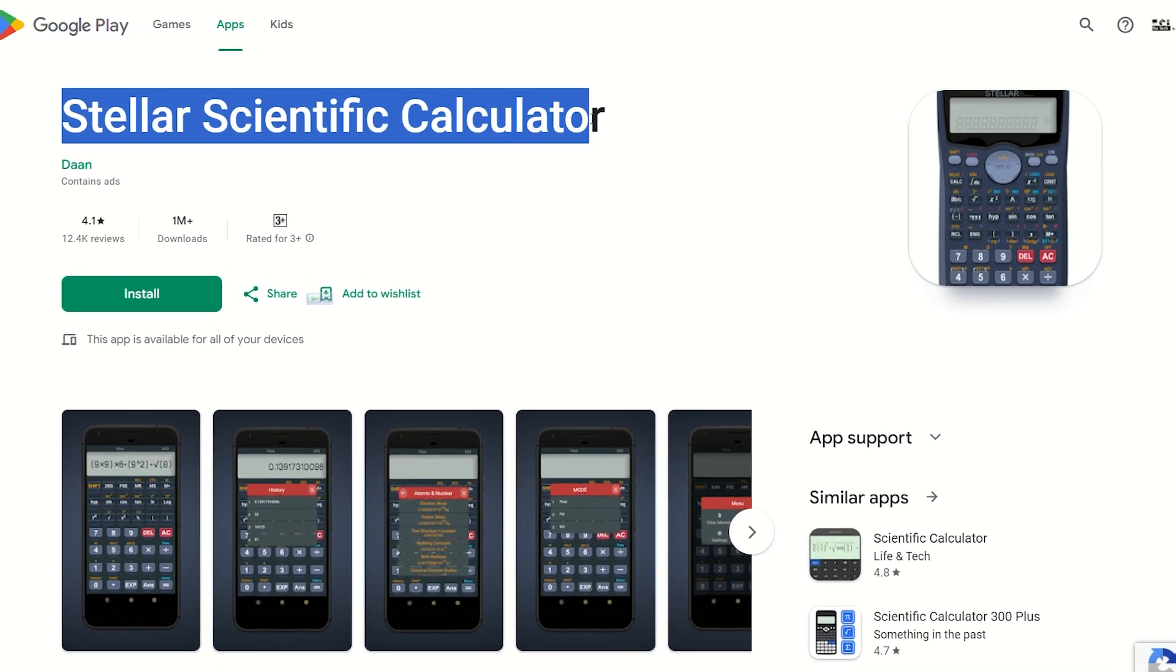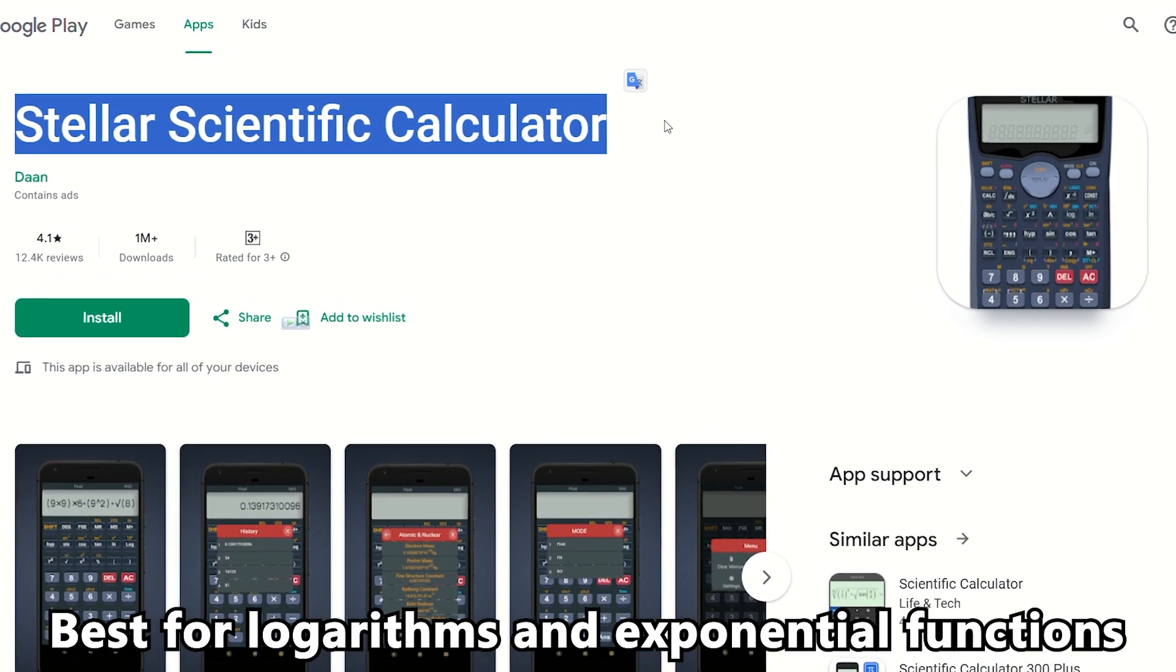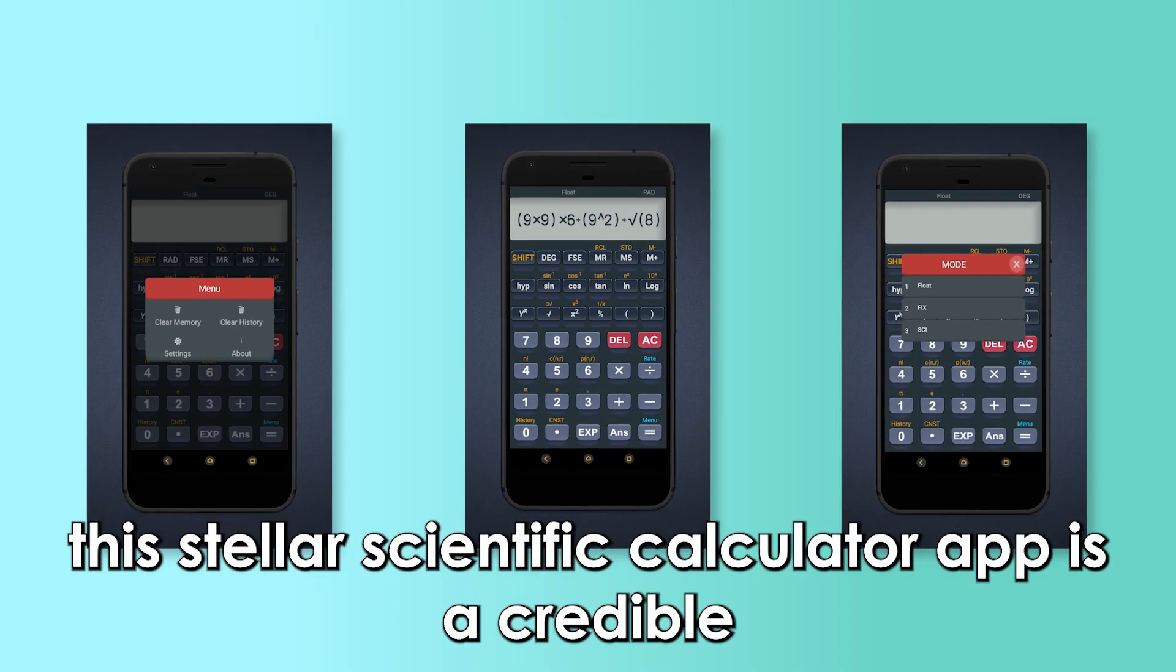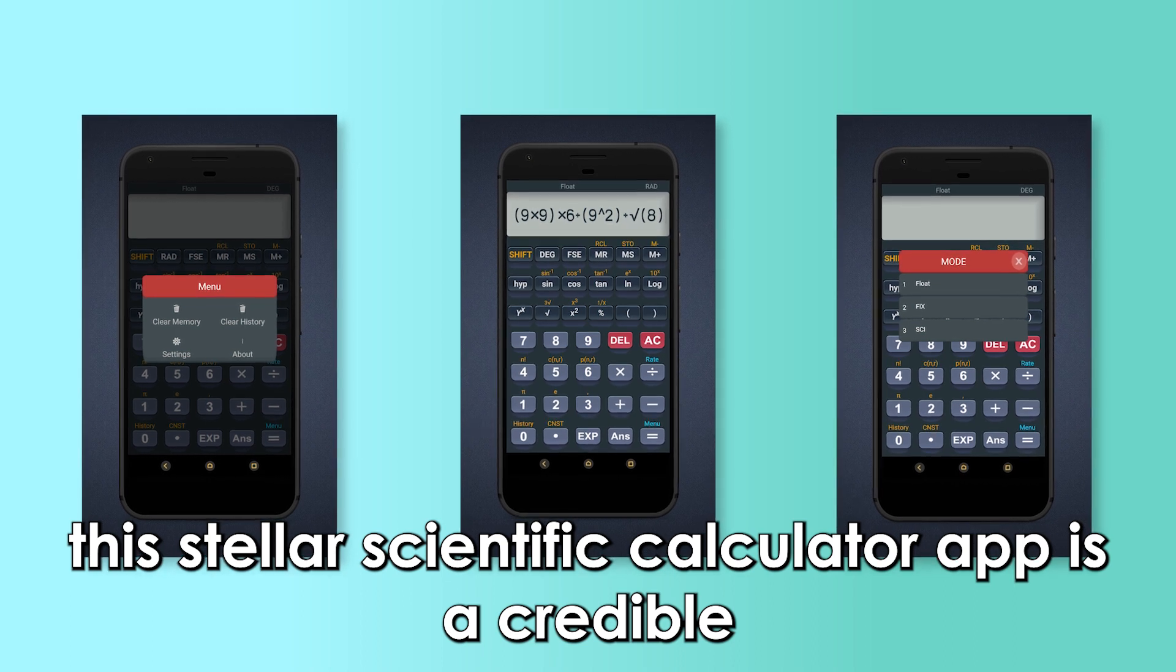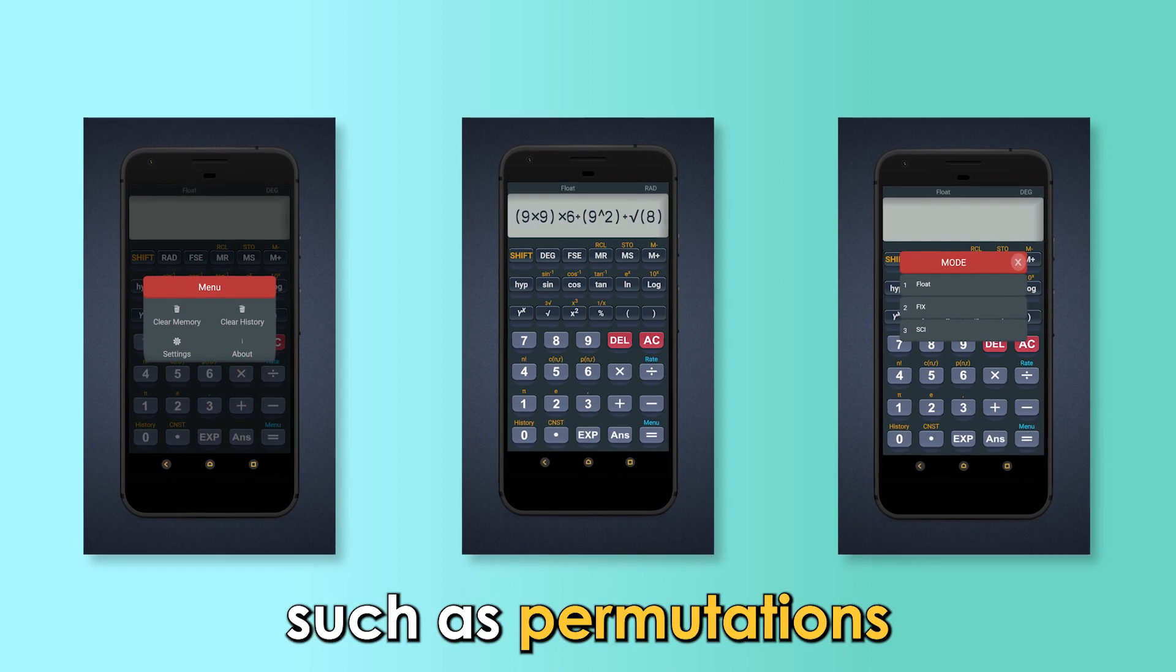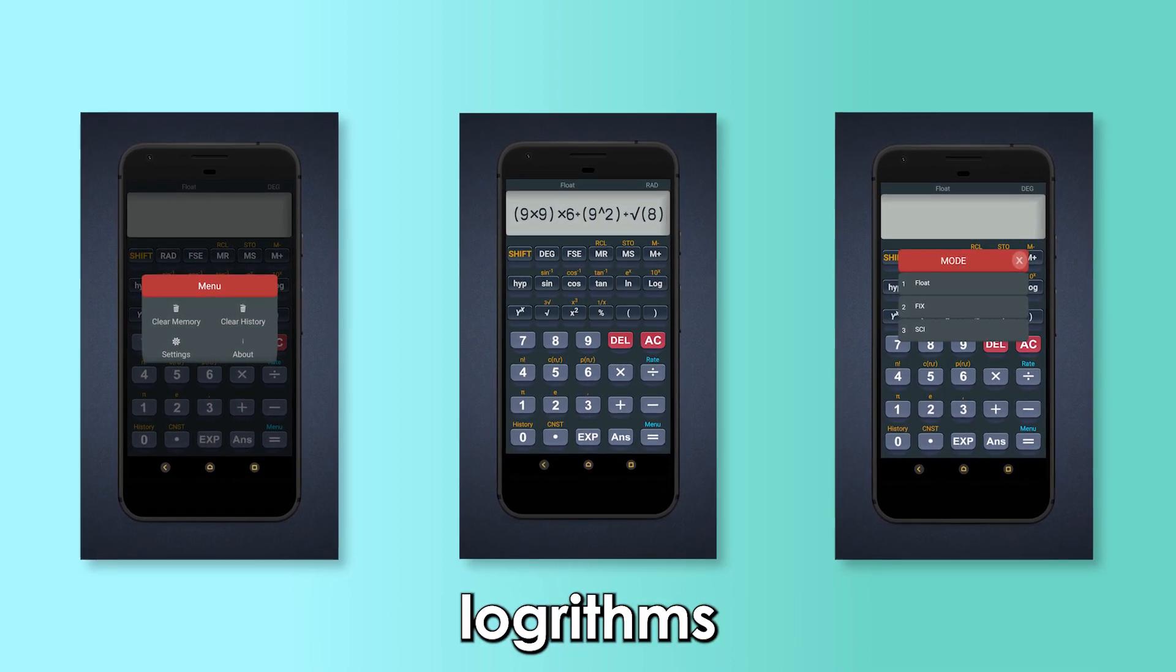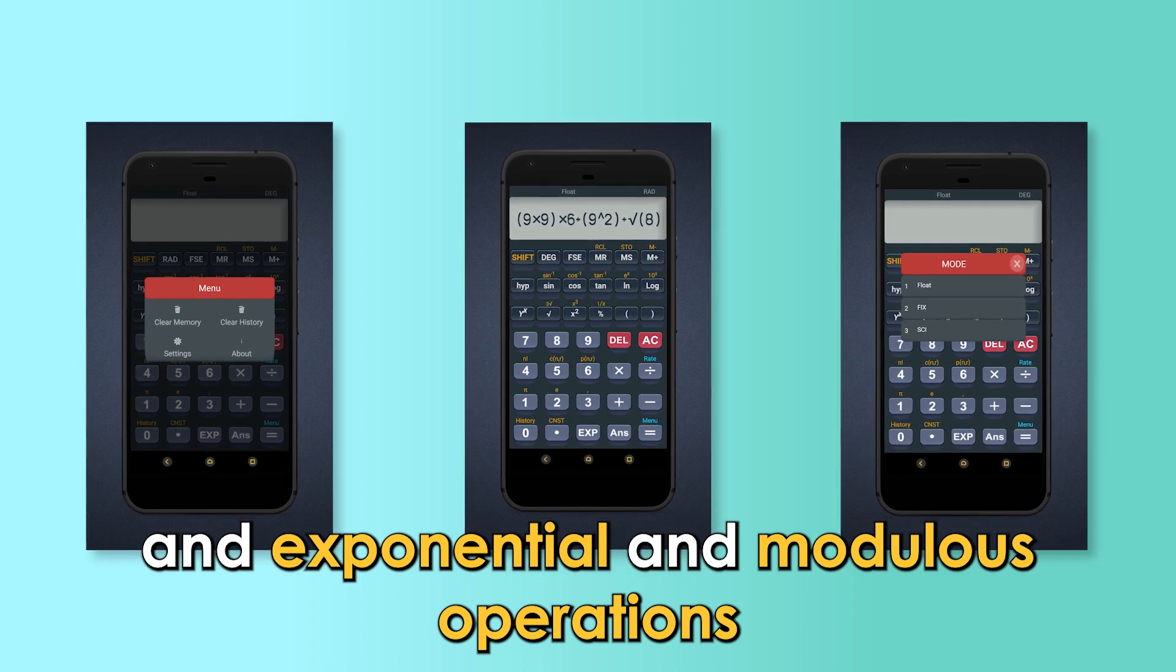Stellar Scientific Calculator App, Best for Logarithms and Exponential Functions. The Stellar Scientific Calculator App is a credible mathematical tool that helps to solve math formulas with different functions, such as permutations, combinations, logarithms, and exponential and modulus operations.